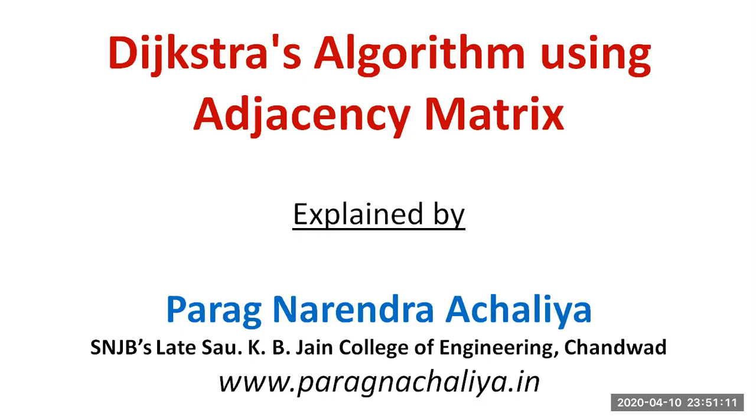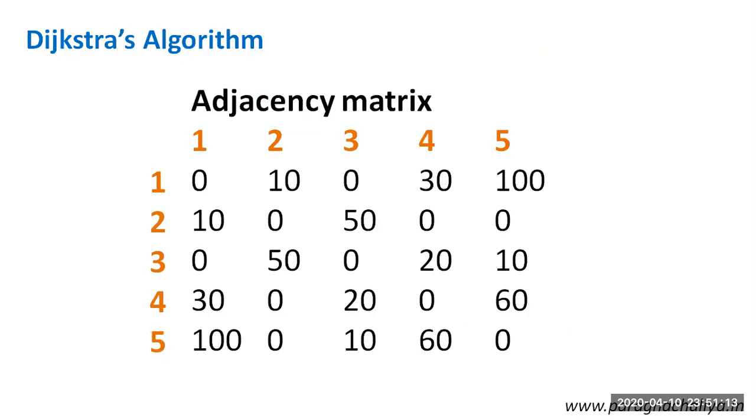Before that, let's take an example of a matrix. In this, the numbers indicated in orange color are the nodes, whereas the numbers indicated in black color is the distance between different nodes.